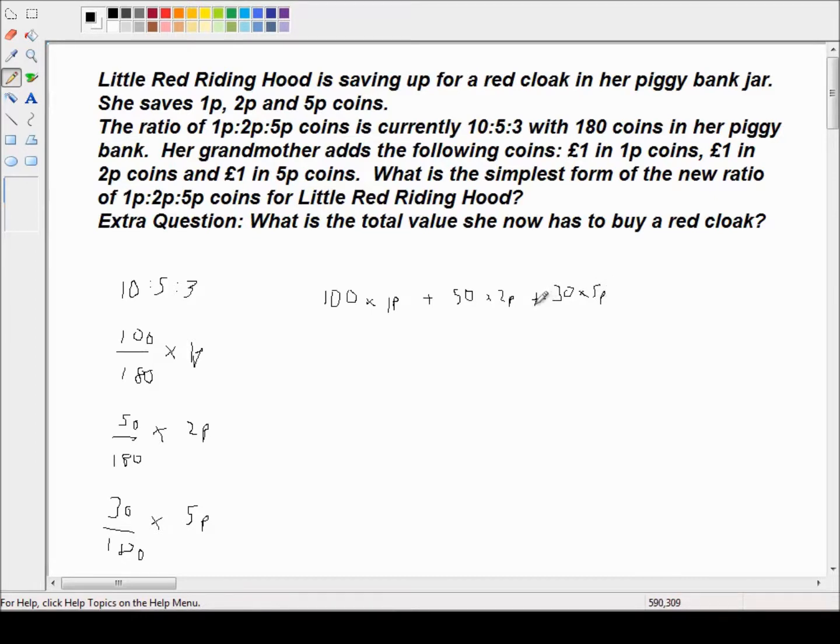Now her grandmother gives her one pound in 1p, 2p and 5p coins. So she's got one pound in 1p coins. So that's 100 1p's makes one pound. 50 2p's make a pound. And 5 times 2 is 10, so that's 20 5p coins make a pound.